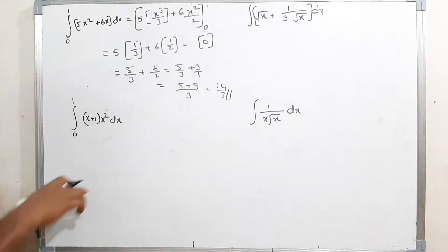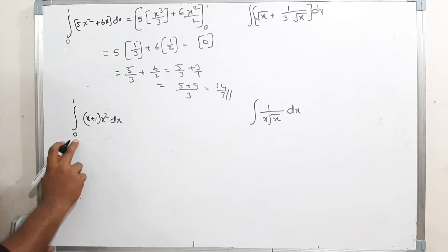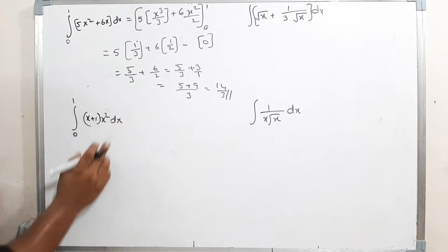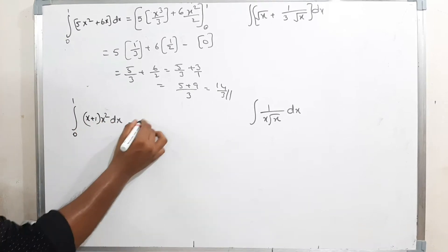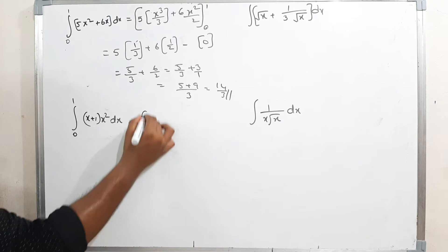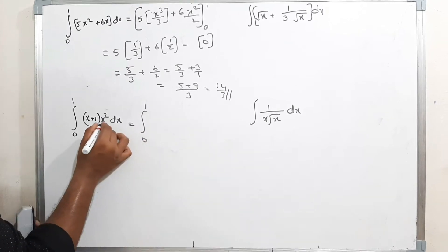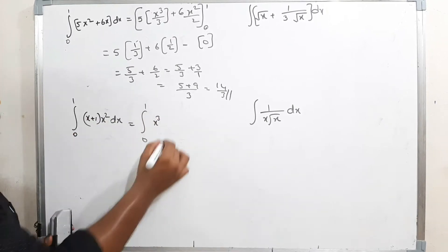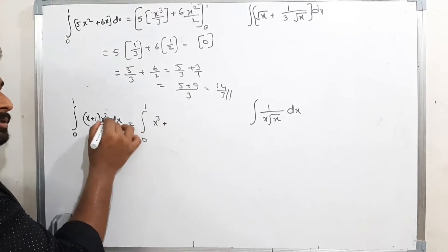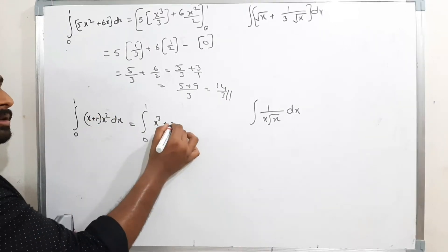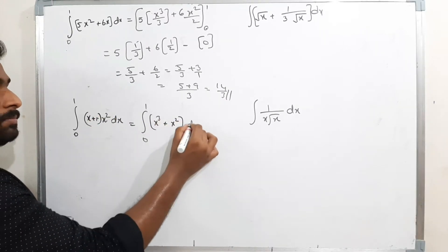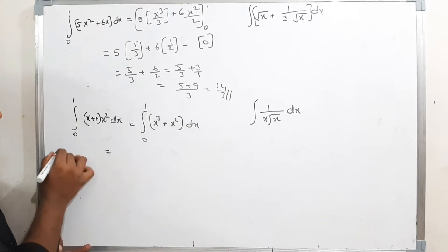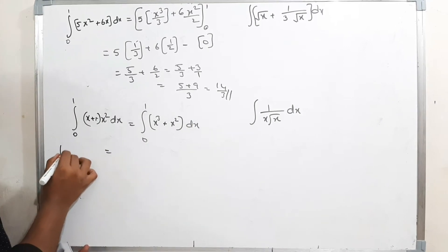The next problem is integration from 0 to 1 of (x+1)(x²) dx. Expanding the product: x² times x is x³, plus x² times 1 is x². So we integrate x³ + x² dx from 0 to 1.